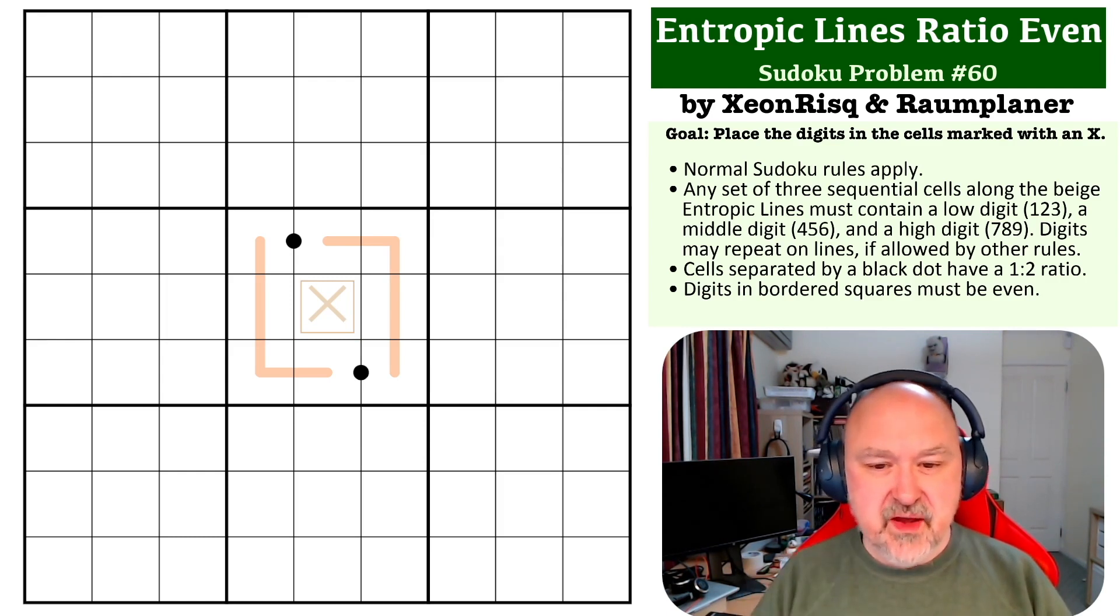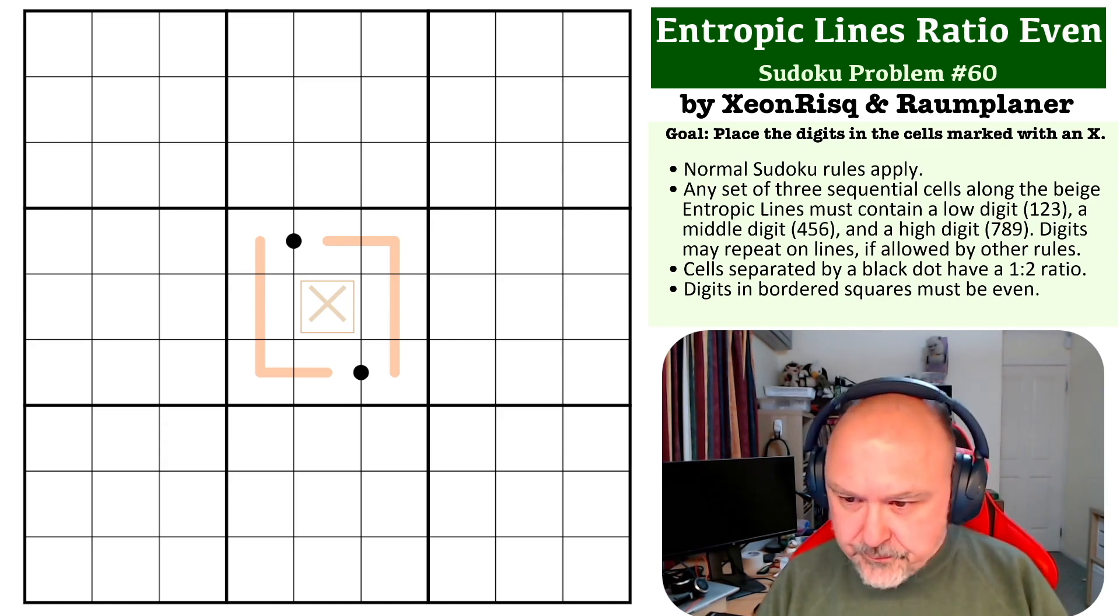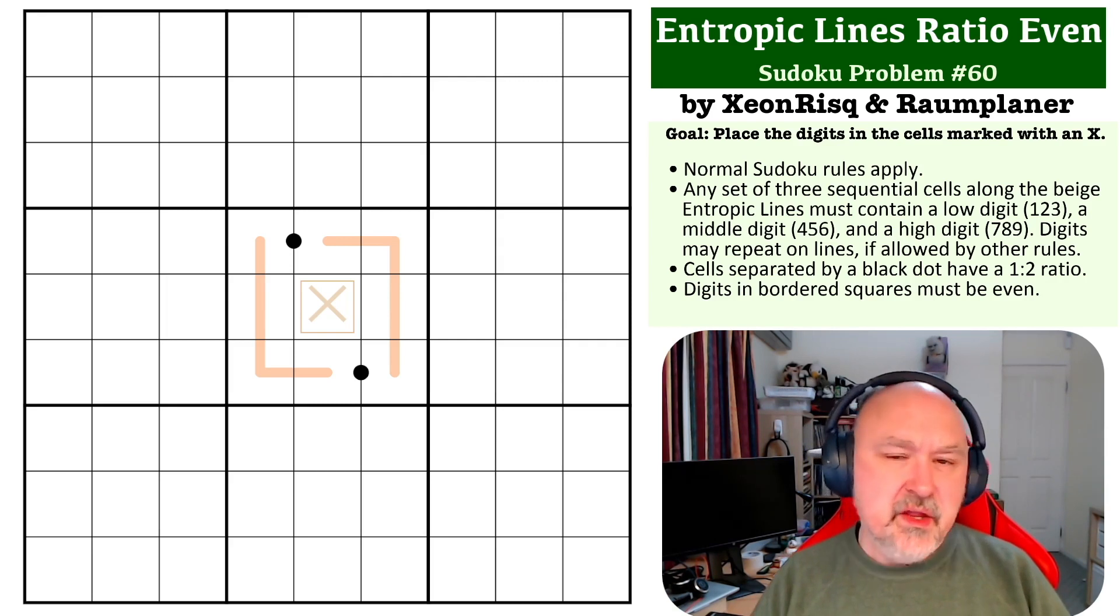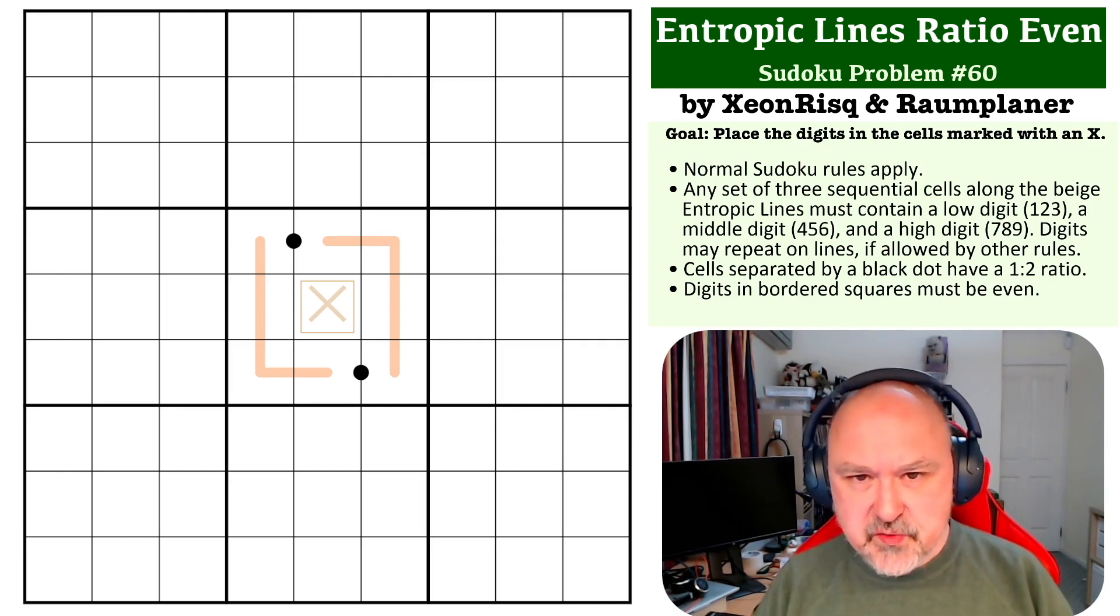I've used the bordered square for even. I probably shouldn't have for this one, but it is a bit of a tradition on my channel. So the way entropic lines works is any set of three sequential cells along an entropic line has to contain a low, a middle, and a high digit. The ratio dots mean that the cells separated by the dots must be in a one to two ratio, and the cell with the bordered square must be an even digit.